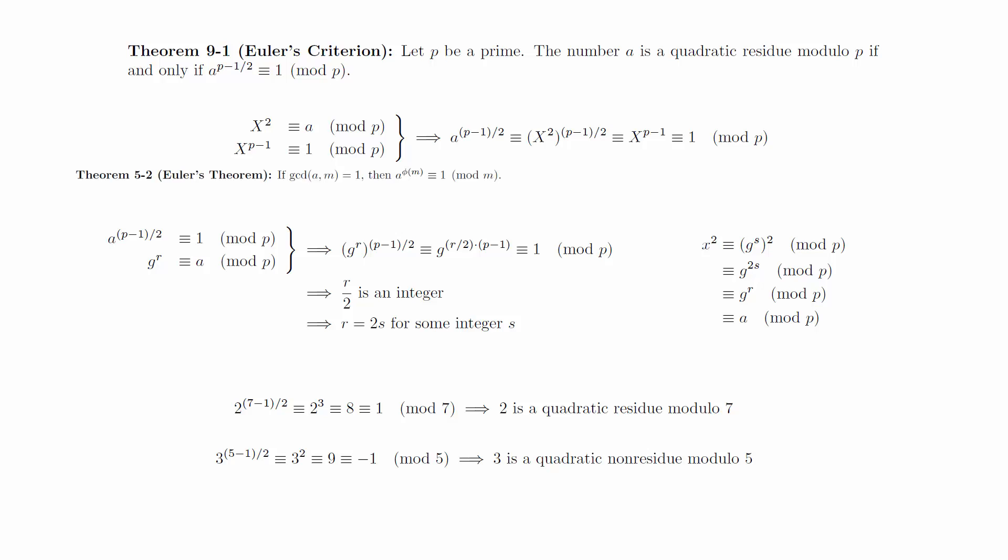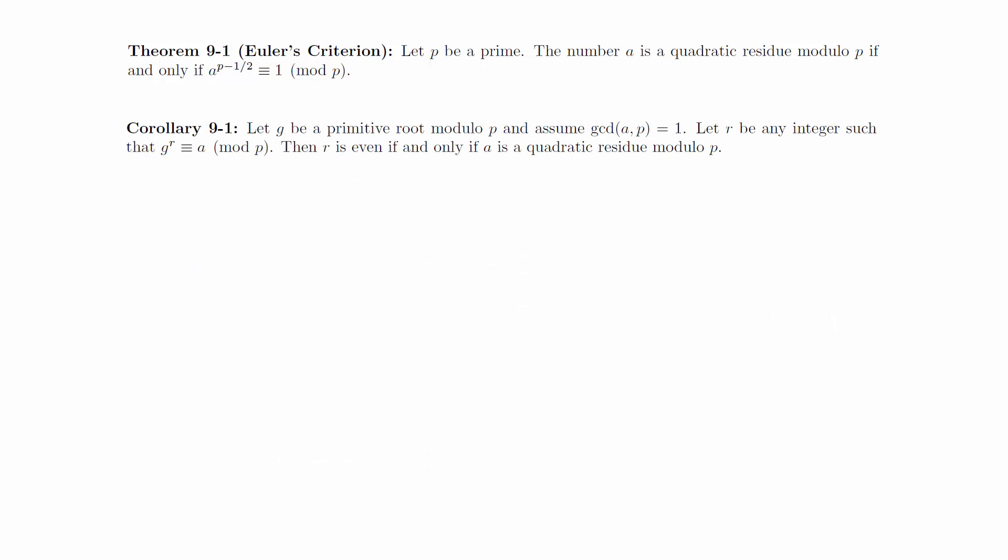The proof we completed also gives us a quick corollary. Let g be a primitive root modulo p and assume that gcd(a, p) equals 1. Let r be any integer such that g to the r is congruent to a modulo p. Then r is even if and only if a is a quadratic residue mod p.